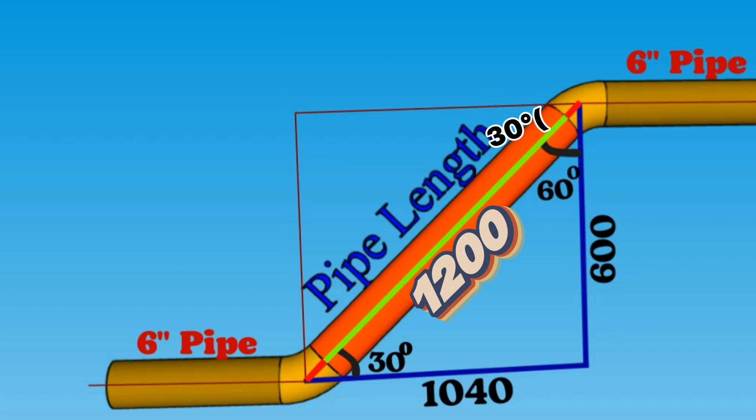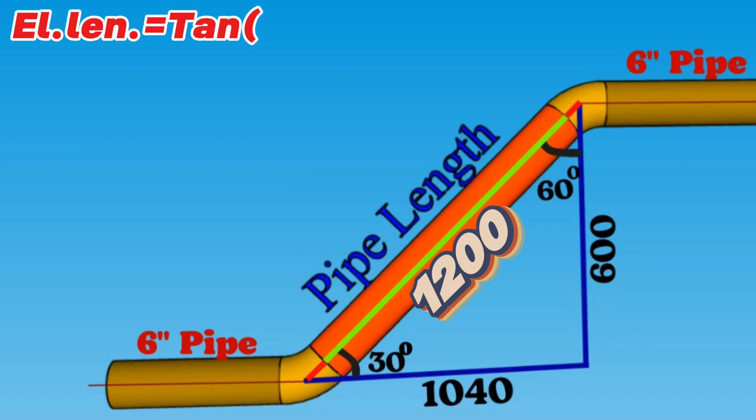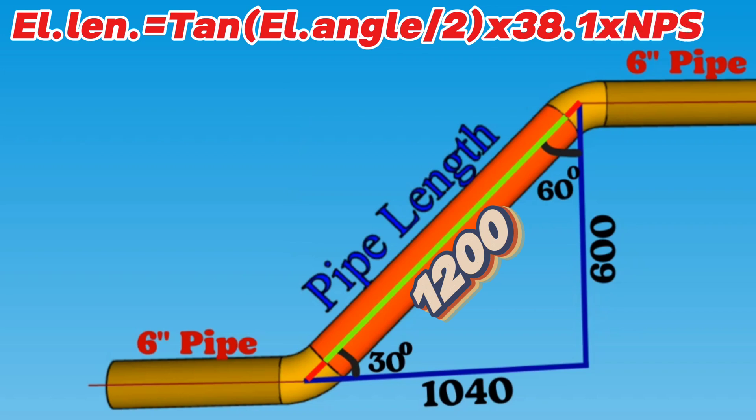The formula for cutting the elbow with any degree is as follows: Elbow length equals tangent in bracket elbow angle divided by 2, multiplying 38.1, multiplying nominal pipe size of elbow. So, let's write our example details in this formula.